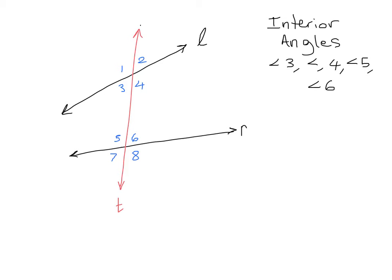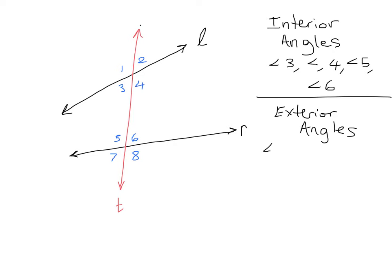In the same way, you can probably guess what our exterior angles are. The exterior angles are the angles formed on the outside of those coplanar lines. Our exterior angles are angle one, angle two, angle seven, and angle eight.